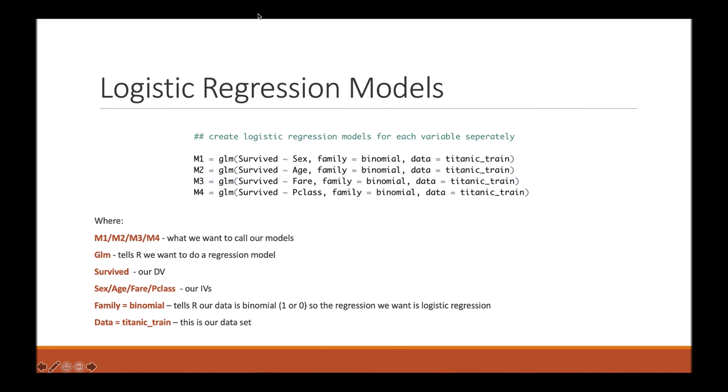GLM tells R we want to do a regression. Survived is our dependent variable, and then either sex, age, fare, or class are our independent variables. Family equals binomial is telling R that our data is binomial, which is 1 or 0, so the regression we want to do is a logistic regression. And finally, data equals titanic_train. So this is our dataset that we are going to use and where we have pulled our variables from.